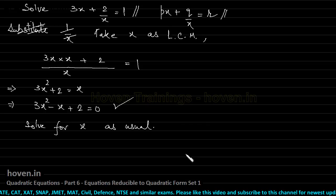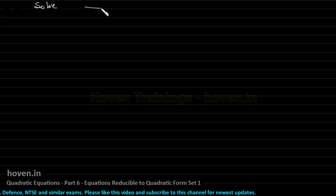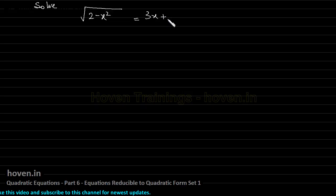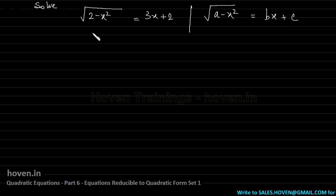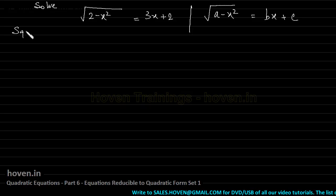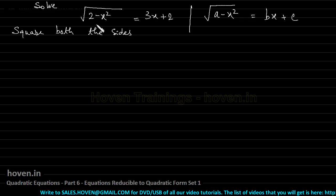Let us have a look at other equations that are convertible. For example: solve √(2 − x²) = 3x + 2. The general form of such convertible equations is √(a − x²) = bx + c. Such equations look difficult at first sight but they are not at all difficult. How to solve these equations? You don't need any substitution — square both sides.